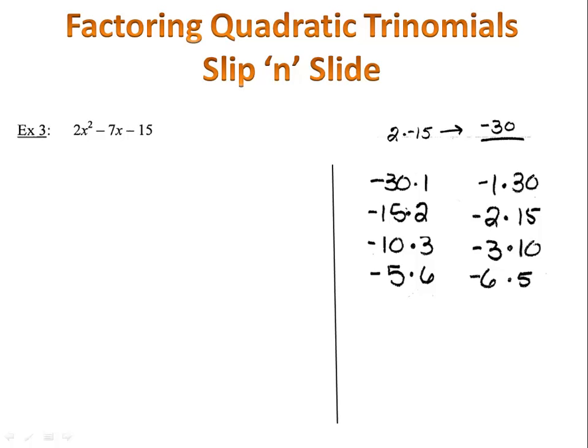Negative 30 times 1, negative 15 times 2, negative 10 times 3, negative 5 times 6, negative 6 times 5, negative 3 times 10, negative 2 times 15, and finally negative 1 times 30. Out of those choices, we wish to find the pair that adds up to negative 7, the number in front of the x. It looks like negative 10 plus 3 is negative 7, and so there are my pair of numbers.